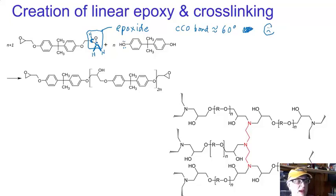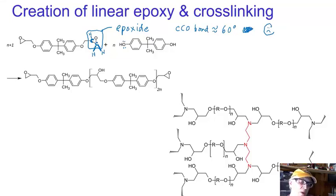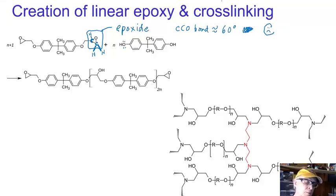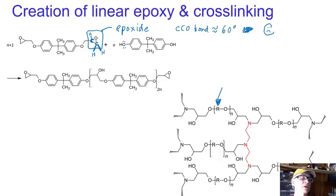Then you add in a crosslinker — an amino group, something like TETA — which comes in, reacts different chains to each other, and cross-links them. This is how a two-part epoxy system works. By varying the R groups, you can make epoxies with more or less flexibility — brittle epoxy or a soft, rubbery epoxy.